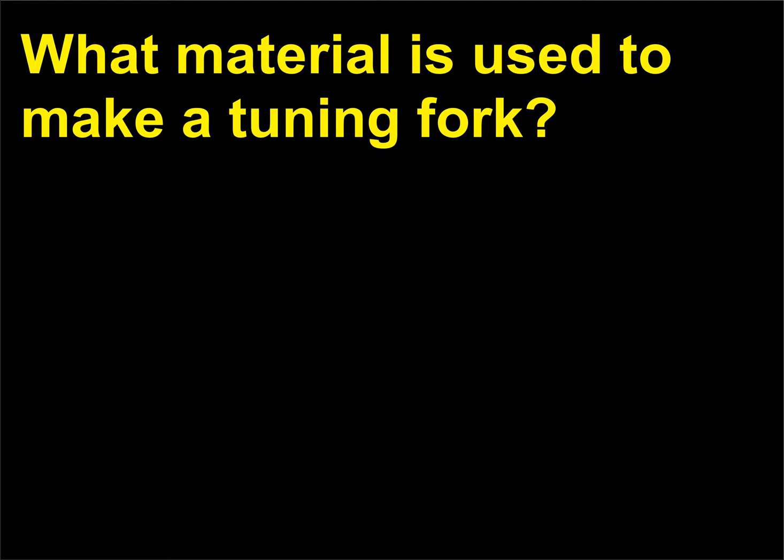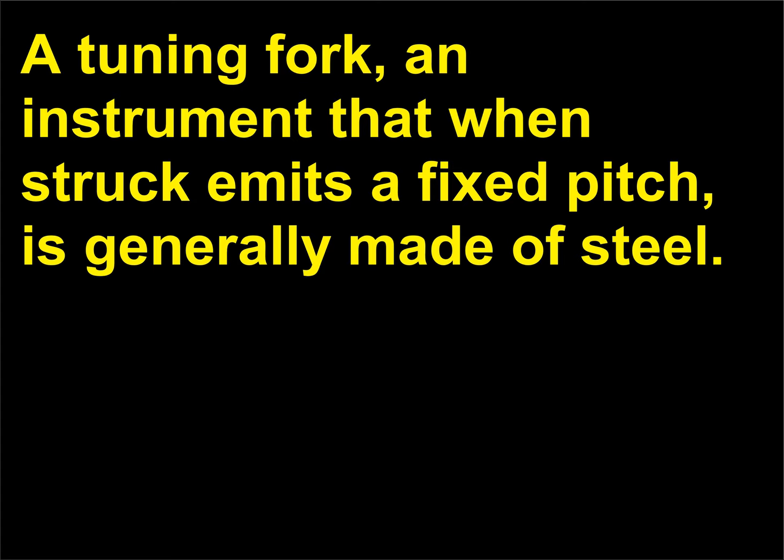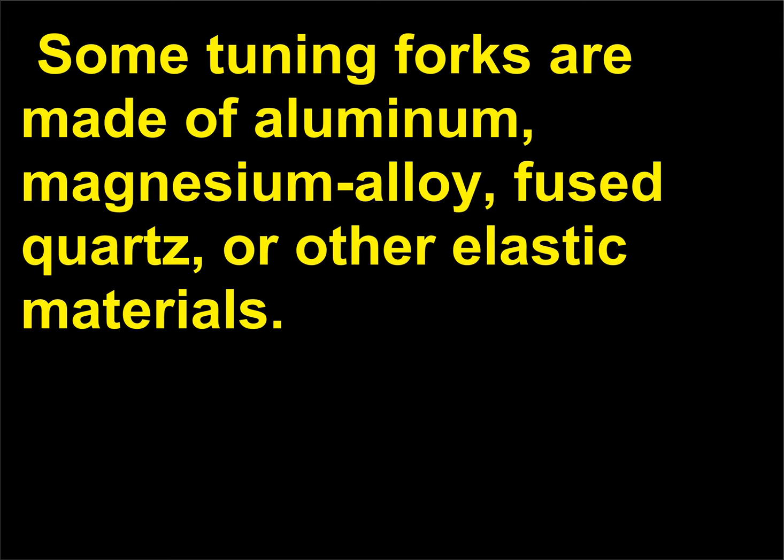What material is used to make a tuning fork? A tuning fork, an instrument that when struck emits a fixed pitch, is generally made of steel. Some tuning forks are made of aluminum, magnesium alloy, fused quartz, or other elastic materials.